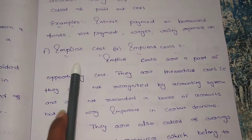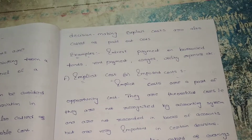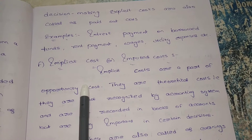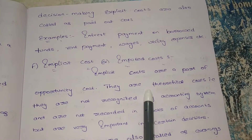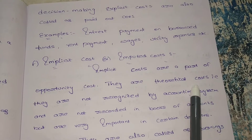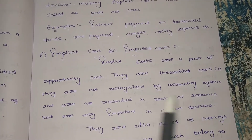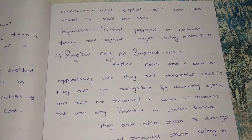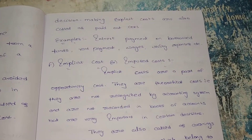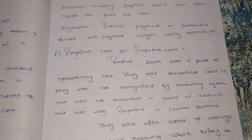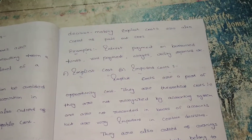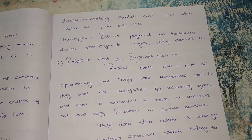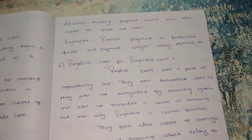Next, what is implicit cost? Implicit costs are imputed costs — that is the other name of implicit cost. Implicit costs are a part of opportunity cost. They are theoretical costs — they are not recognized by the accounting system and not recorded in the books of accounts. While explicit costs are recorded in the books of accounts, implicit costs are not recorded, but are very important in certain decisions.